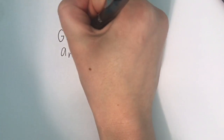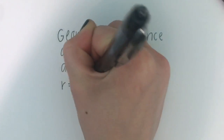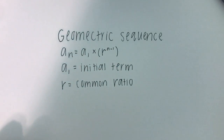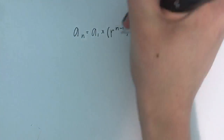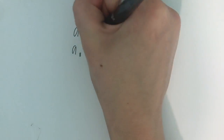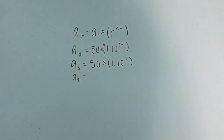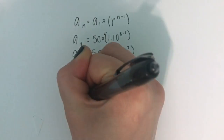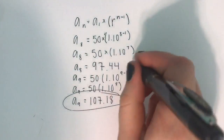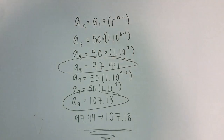In a geometric sequence, the equation is a sub n equals a sub 1 times r to the power of (n minus 1), where a sub 1 is the initial term and r is the common ratio. Amy can take her data and substitute it into the equation. Her a sub 1 is 50 because she started at 50 degrees Celsius, and her r is 1.1 because she increased by 10% each time — the whole number plus the 10%. After solving for the 8th and 9th minutes, she got the 8th minute to be 97.4358 degrees and the 9th minute to be 107.179 degrees. Therefore, the boiling point of water is somewhere between those two numbers, which also corresponds with Jonathan's data.